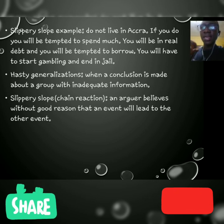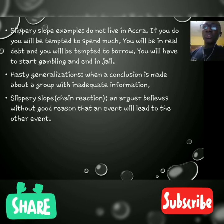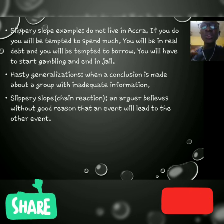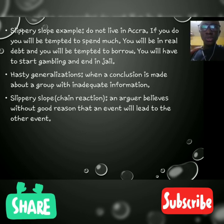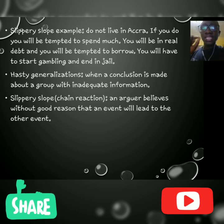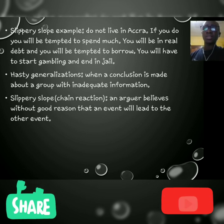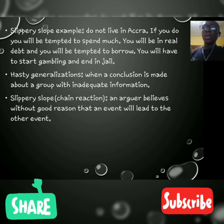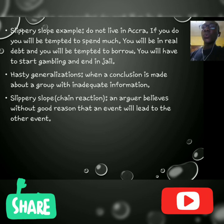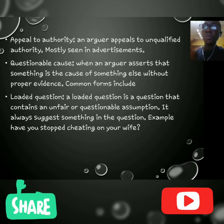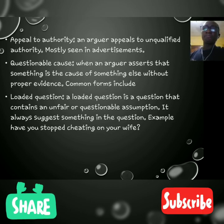Hasty generalization is when a conclusion is made about a group with inadequate information. We normally do this — there are a lot of stereotypes we have about people without enough information. Hasty generalization is a fallacy of unacceptable premises. We have also already covered the slippery slope and appeal to authority in this lesson.